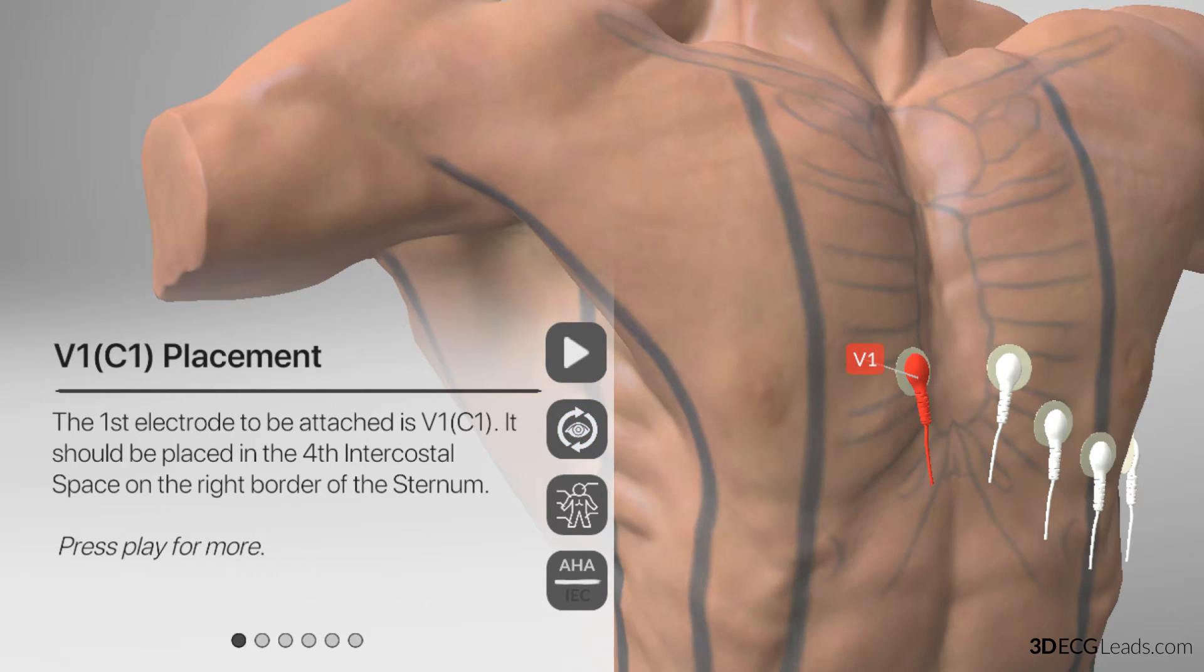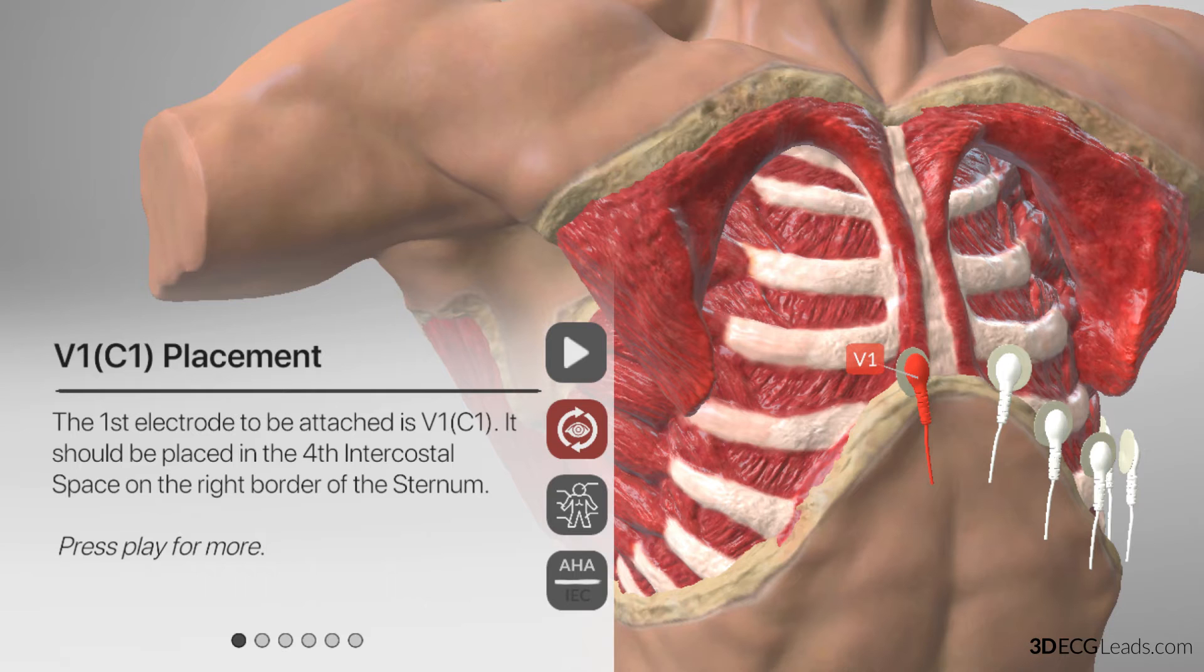If we place V1 directly in the fourth intercostal space, there is a strong possibility of misplacement. So we should do a workaround that will start from the top of the sternum. To see the workaround demonstration, press the play button.